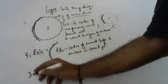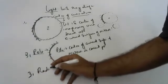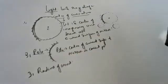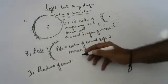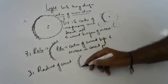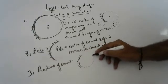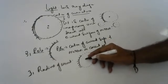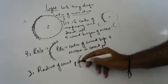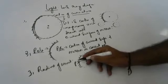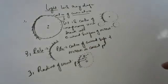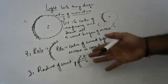Now we will discuss radius of curvature. This is a mirror — if I complete this as a circle, it will have one center called center of curvature, and the center of the curved surface is called pole. Every circle has a radius, and this is also a radius.